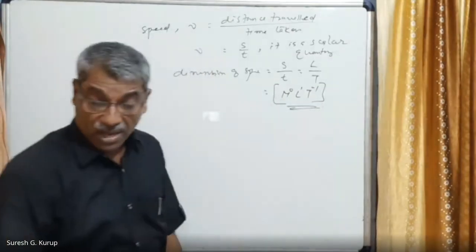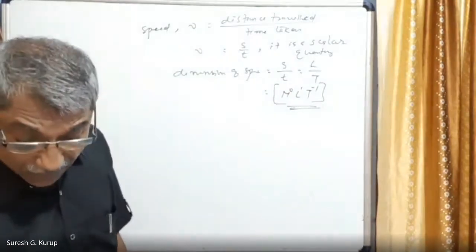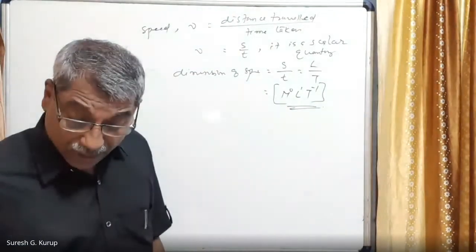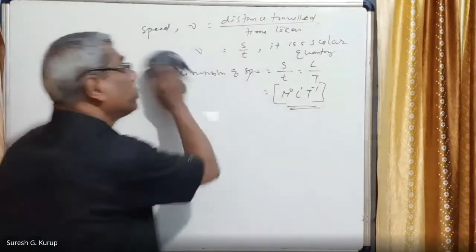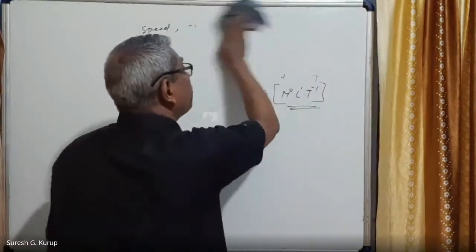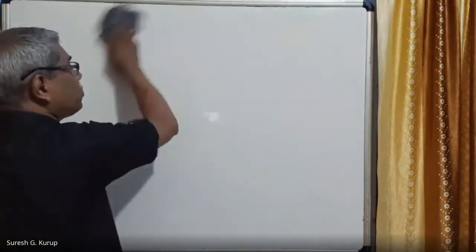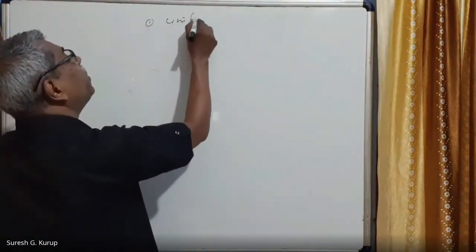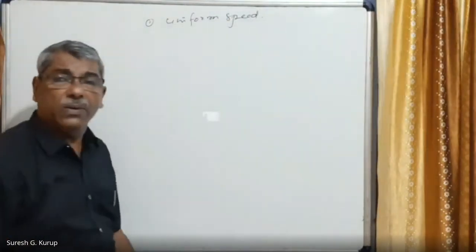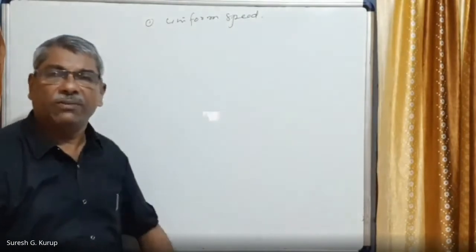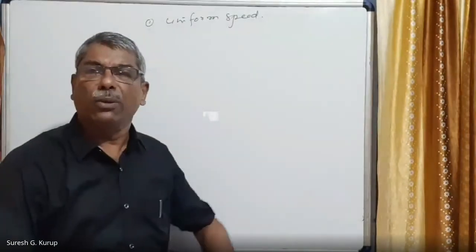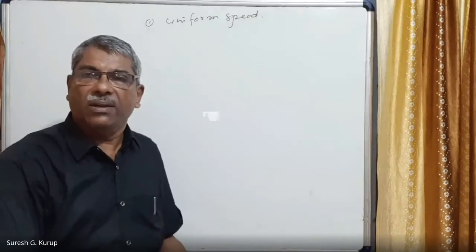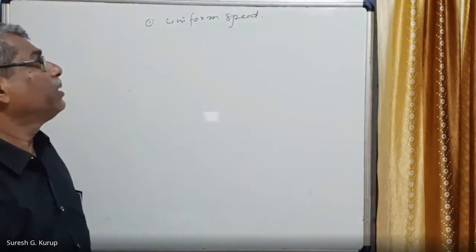Next we discuss uniform speed and variable speed. Uniform speed: if a body covers equal distances in equal intervals of time, the motion is said to have uniform speed. The body can move in any direction since speed is a scalar quantity.